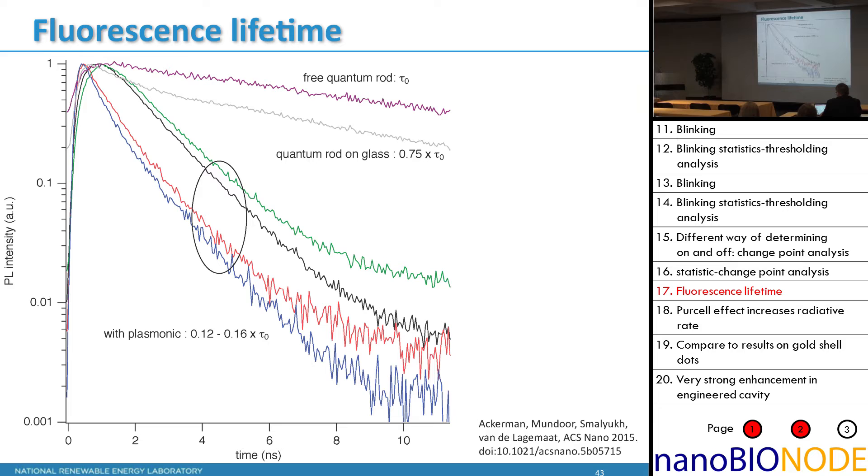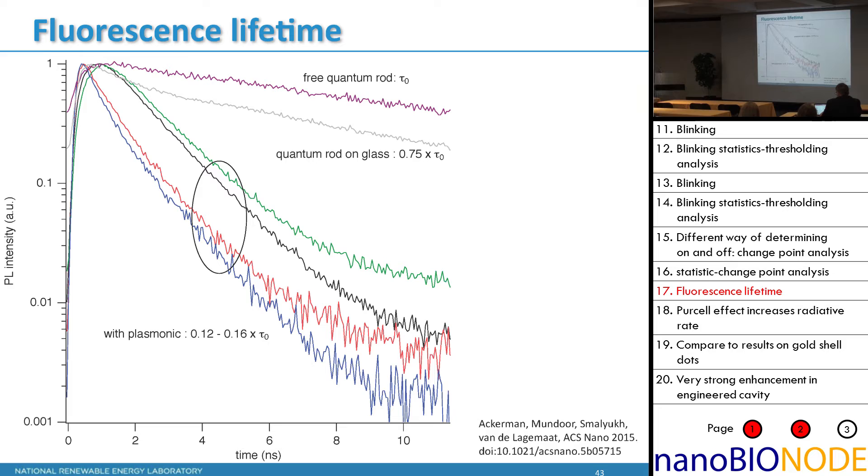Then with time-correlated single photon counting, you look at particles. Here's four different ones with different quantum rods and different nanobursts dropped into them. What we see if you look at the free quantum rods just floating around in the liquid crystal, you get a very long lifetime, tens of nanoseconds in this case. When you put that on glass, you get a slight shortening of the lifetime—this is well known. But when you put the plasmonic particle in it, you get about an order of magnitude decrease of the fluorescence lifetime of these particles. So they're much faster. It's reproducible over many particles here. That it reproduces so well was actually a little bit of a surprise to me because you saw those nanobursts are not very well defined in their field enhancement around it. But we get very similar enhancements in every case.